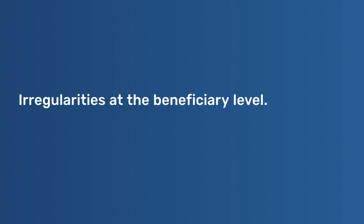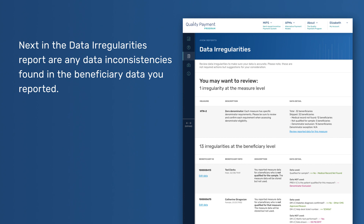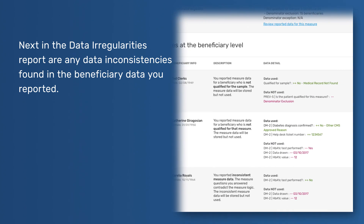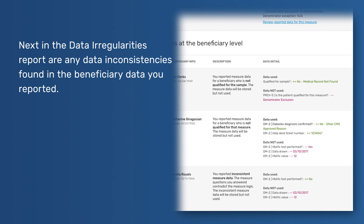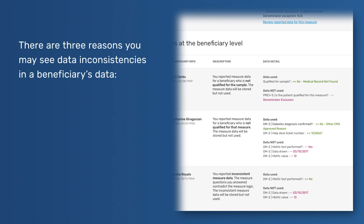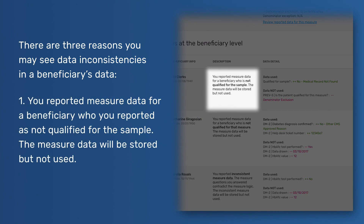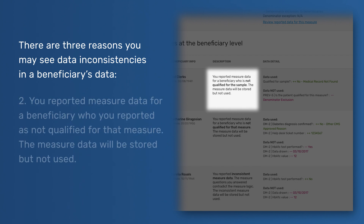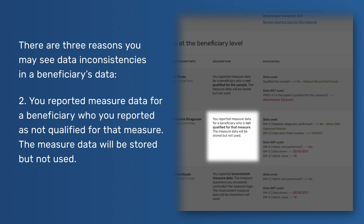Irregularities at the beneficiary level. Next in the Data Irregularities report are any data inconsistencies found in the beneficiary data you reported. There are three reasons you may see data inconsistencies in a beneficiary's data. One, you reported measure data for a beneficiary who you reported as not qualified for the sample — the measure data will be stored but not used. Two, you reported measure data for a beneficiary who you reported as not qualified for that measure — the measure data will be stored but not used.